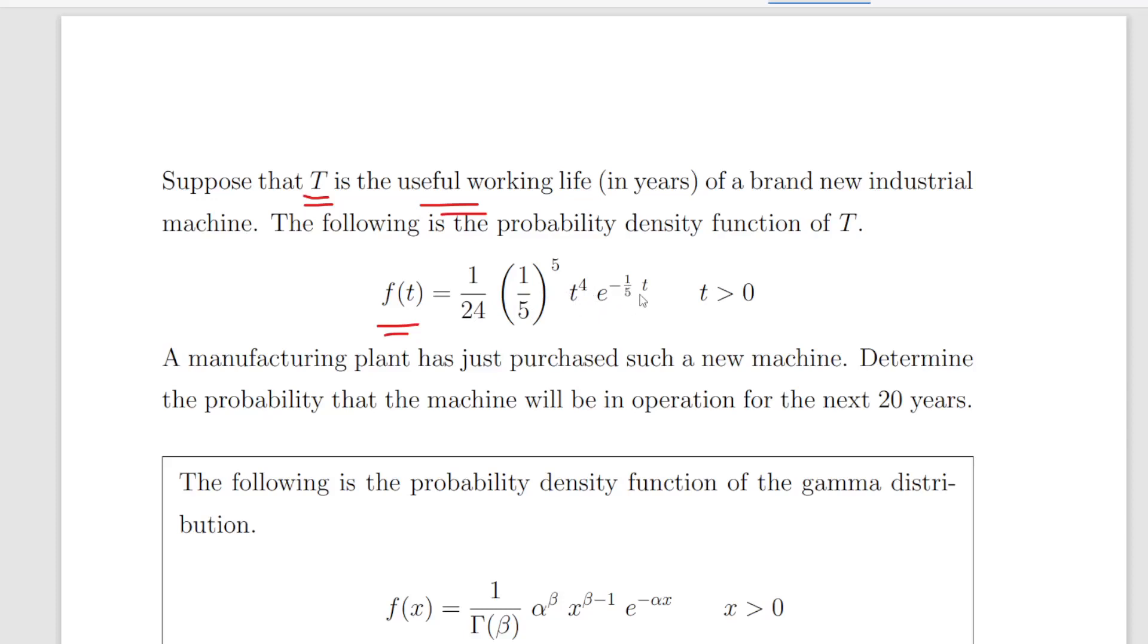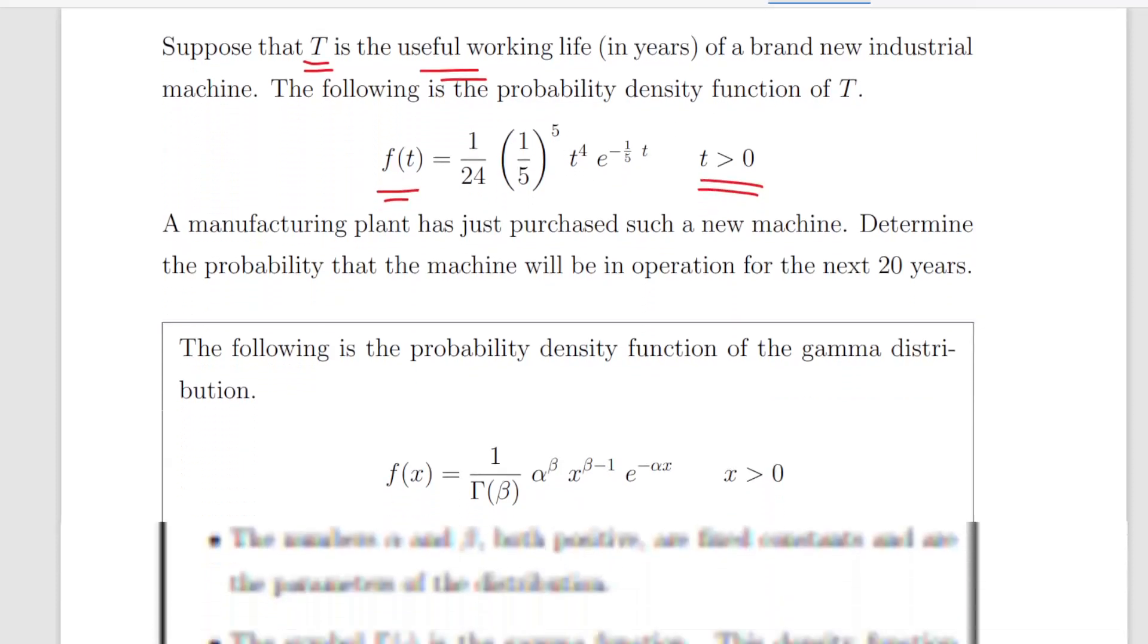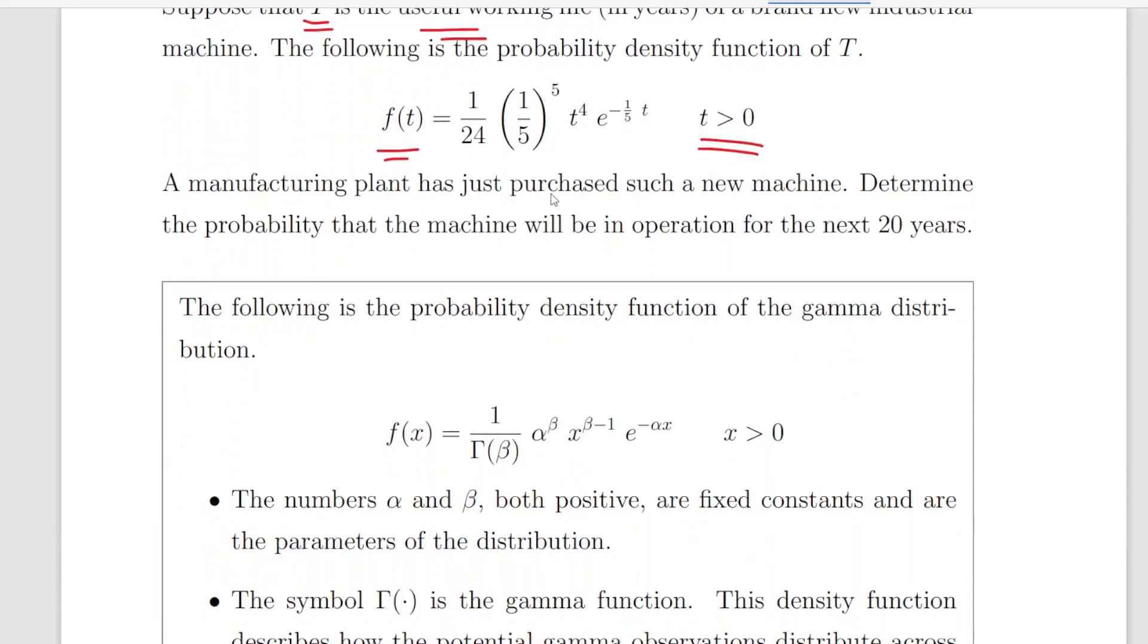A manufacturing plant has just purchased the new machine. Determine the probability that the machine will be in operation for the next 20 years, that is to say, calculate the probability of T being greater or equal to 20.